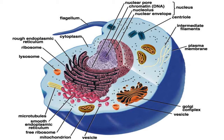Peroxisomes — microbodies — are a diverse group of organelles that are found in the cytoplasm, roughly spherical and bound by a single membrane. There are several types of microbodies, but peroxisomes are the most common.